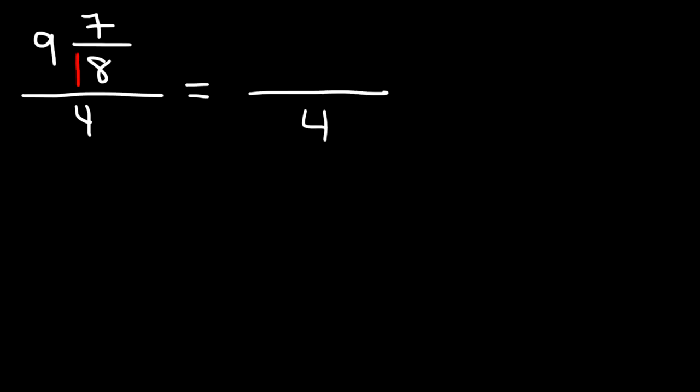So since we have a denominator of 8, that's going to transfer over to the improper fraction. And then we need to multiply 9 times 8. 9 times 8 is 72. And then we need to add 7. 72 plus 7, that's going to be 79.